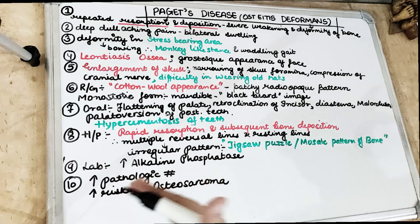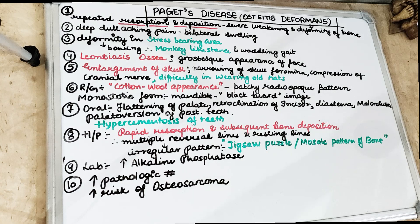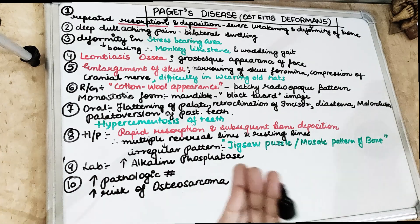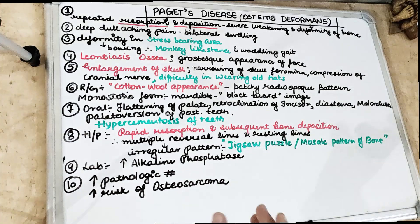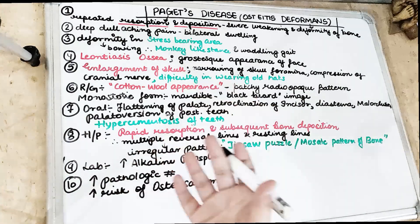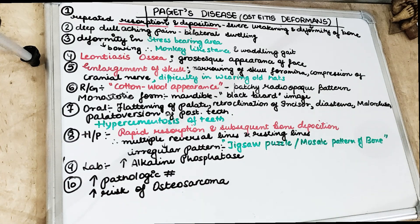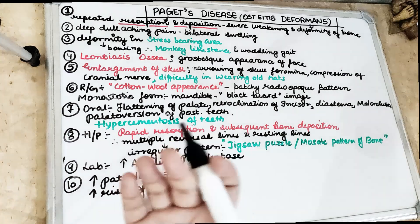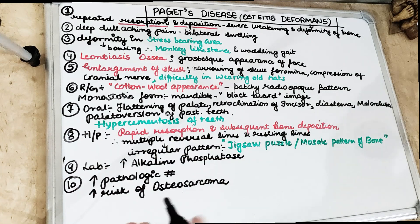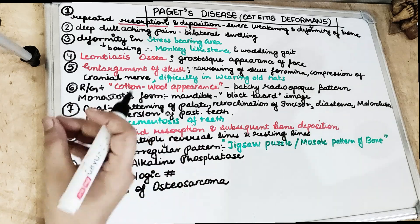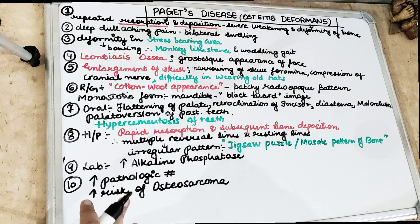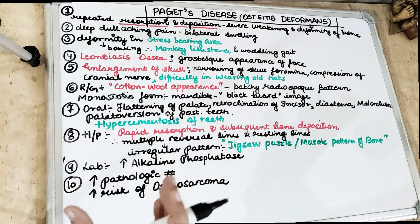There are phases in Paget's disease: initially there is an osteolytic phase where resorption of the bone takes place, and then later there is an osteoblastic or sclerotic stage where deposition takes place. Many cases are asymptomatic, but in most cases there is a deep, dull, aching pain which the patient suffers from. The pain can be so severe that the patient is sometimes unable to move the affected part.